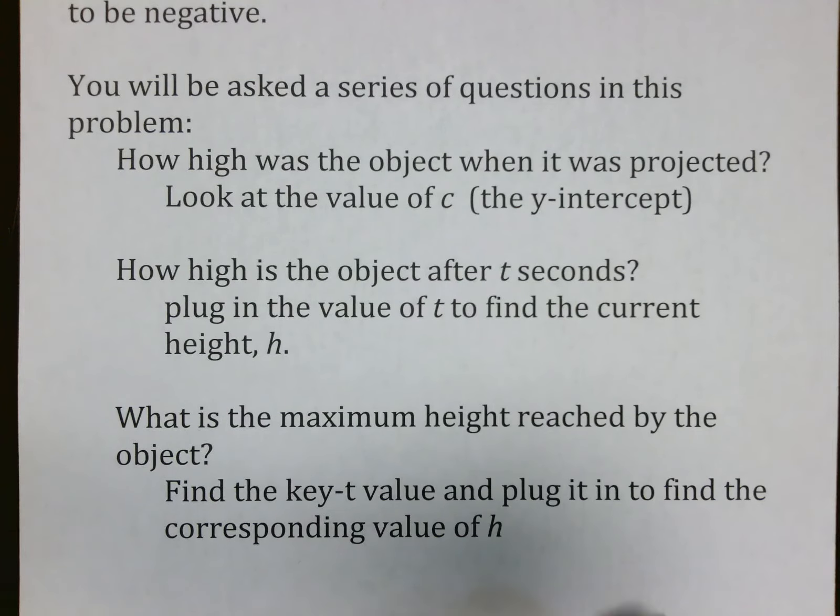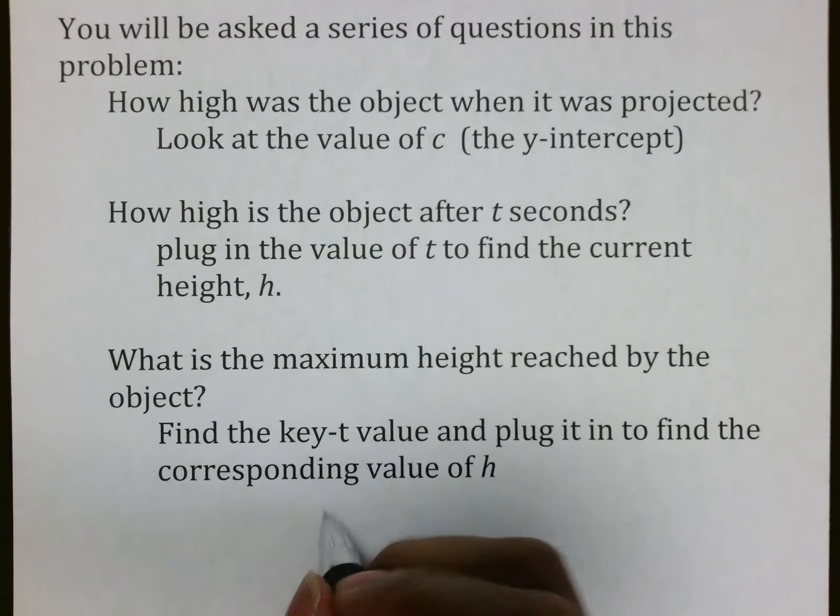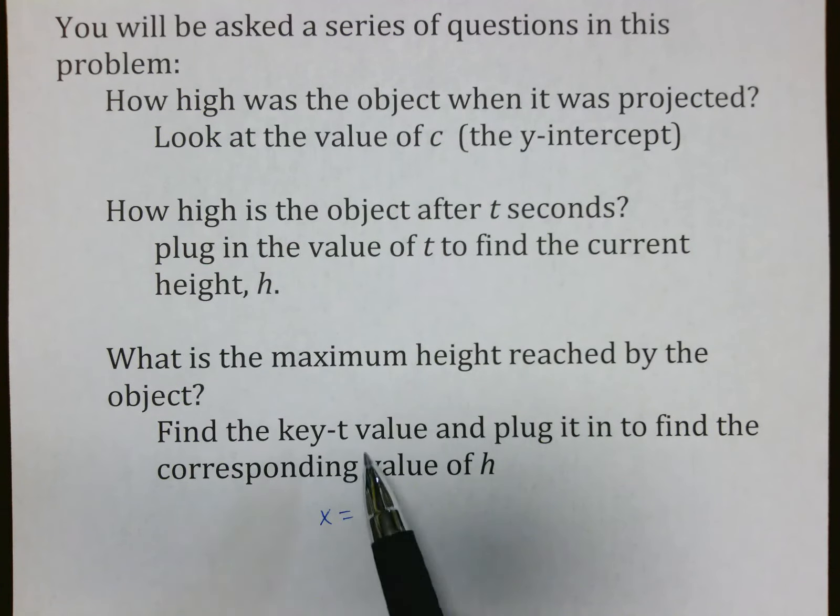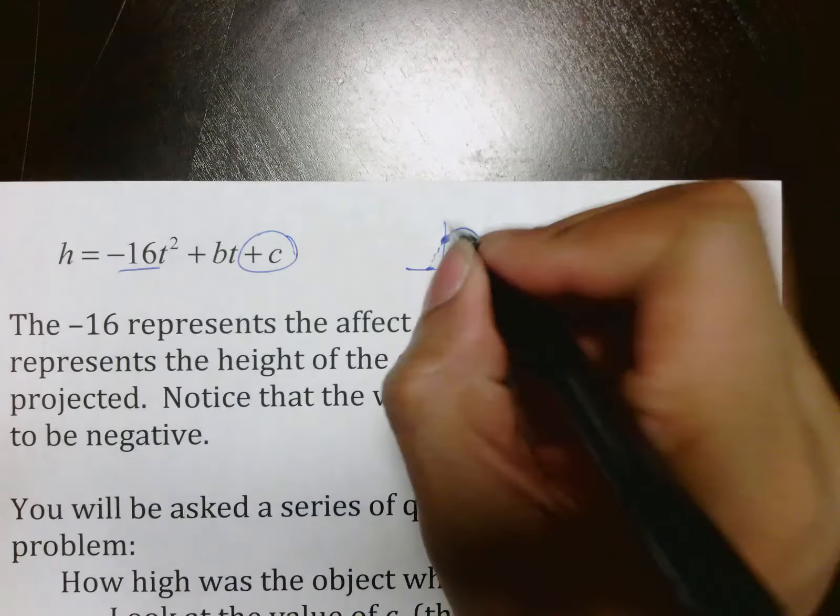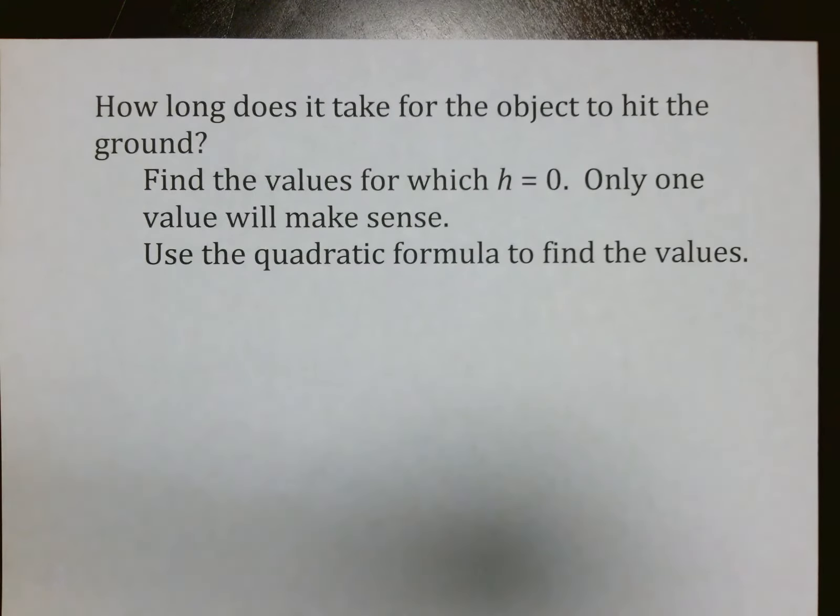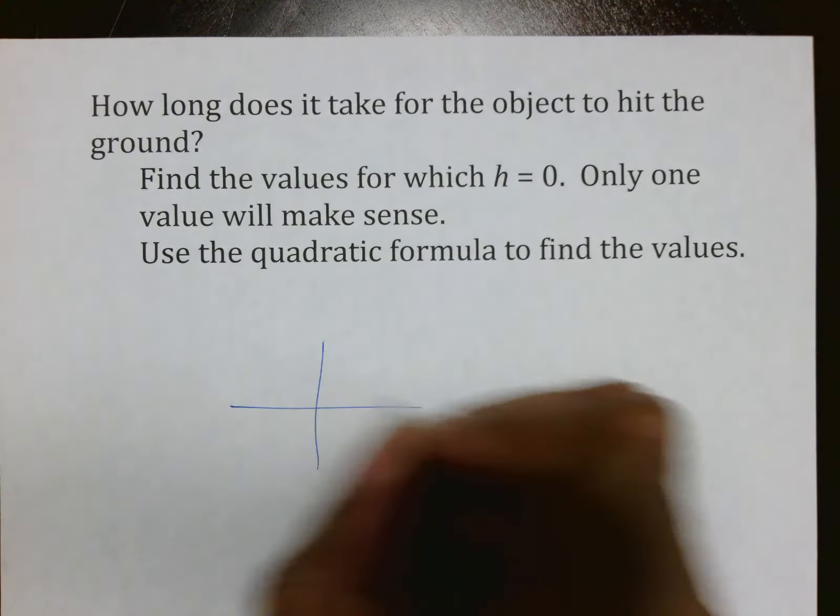What is the maximum height? This is where you have to use your x equals negative b over 2a. Although it's not an x, it's a t, but it's the same thing to us because we do the same thing as we would normally do, which is use b, use a, plug those in, and then actually use your calculator to actually find those numbers. And the maximum height is going to be at this point.